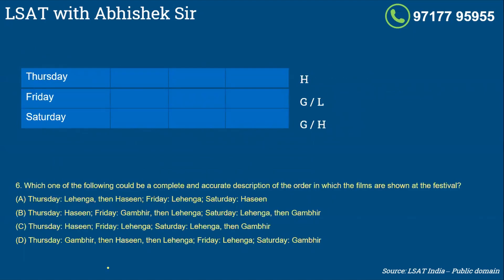Look at the first question: which of the following could be a complete and accurate description of the order in which the films are shown at the festival? When so many conditions are given and the first question is which could be a complete and accurate description, the best way to solve is - look at one condition. The condition is that Haseen is to be shown on Thursday and no movie is shown after Haseen on Thursday. So use this condition and apply it to all the choices. Thursday: Haseen is the last movie - okay, this is fine. Thursday here: Haseen is the last movie - that's fine.